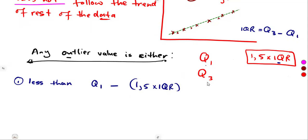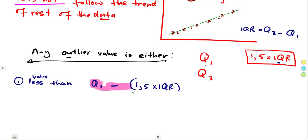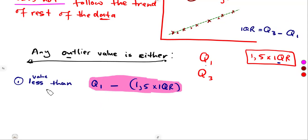A value that is less than Q1 minus 1.5 times the IQR — if it is less than this condition, that value is an outlier. You are comparing on those minimum values, because this will be like the least value you can ever have in your information. This will be referred to as the minimum value. Any value that is less than that is an outlier.